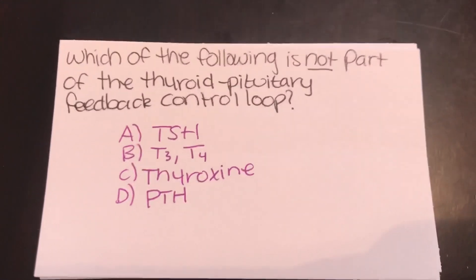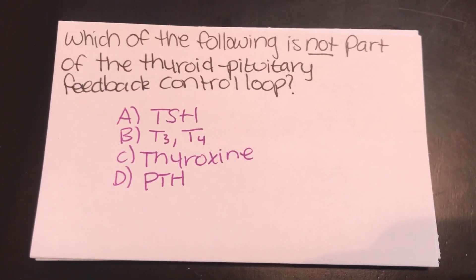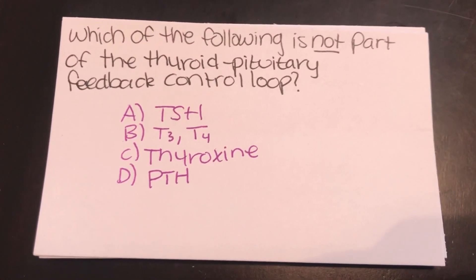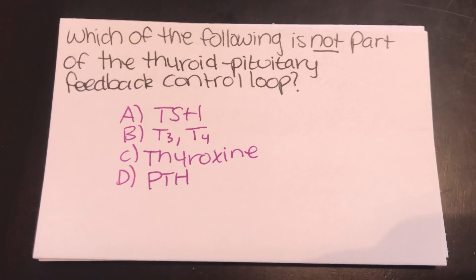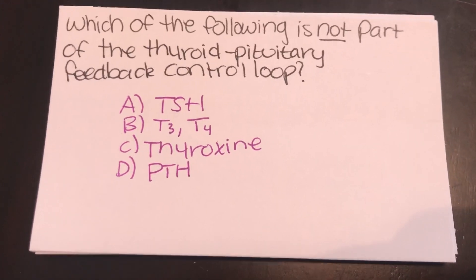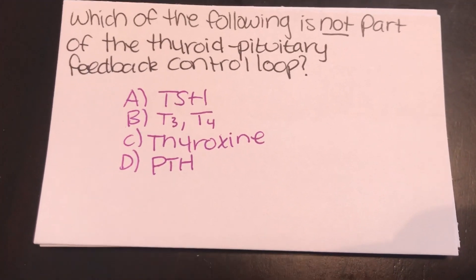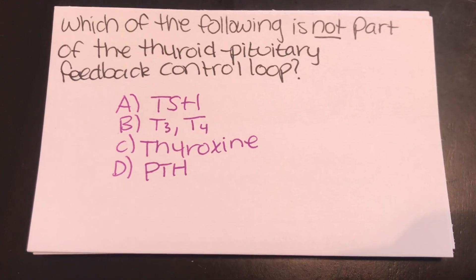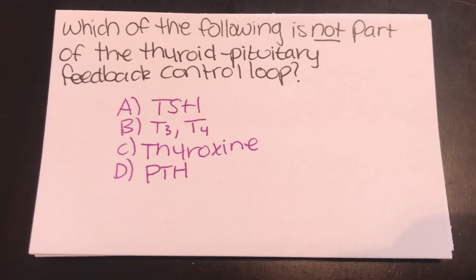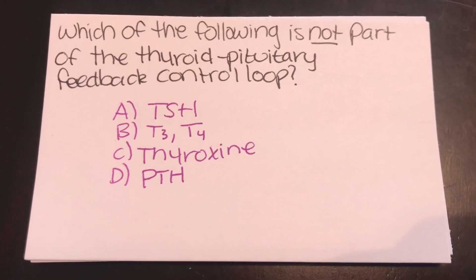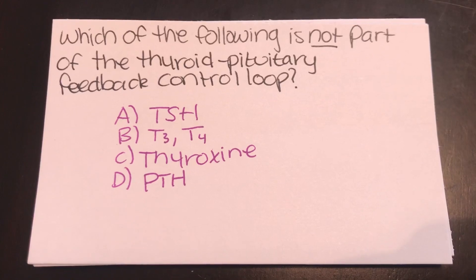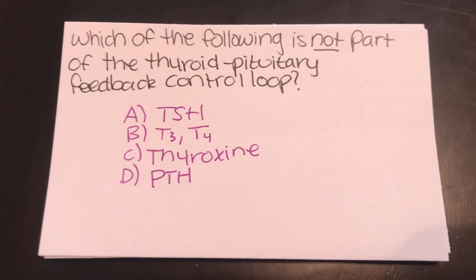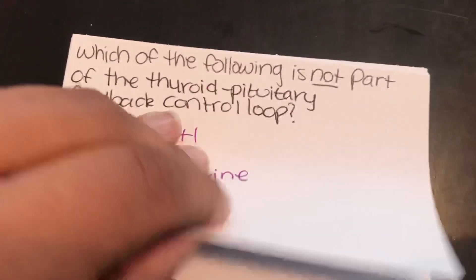Which of the following is not part of the thyroid pituitary feedback control loop? A, TSH. B, T3, T4. C, thyroxin. Or D, PTH. Answer: D, PTH.